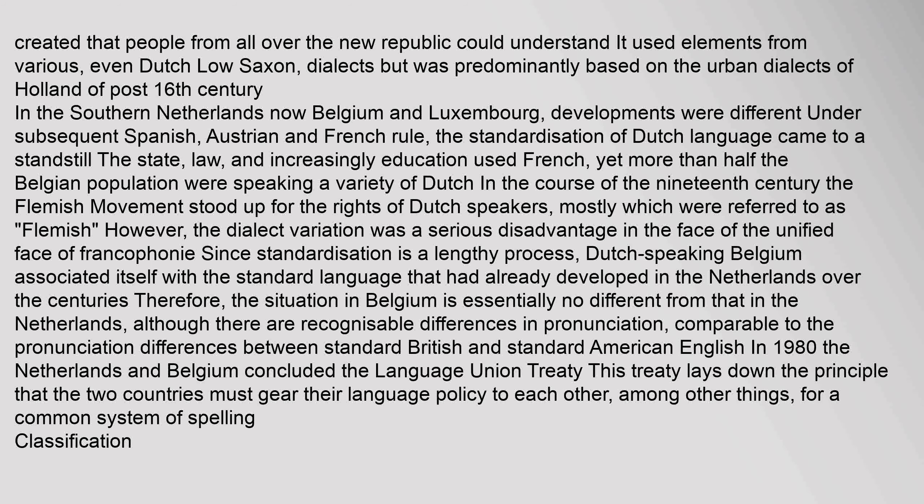In the Southern Netherlands (now Belgium and Luxembourg), developments were different under subsequent Spanish, Austrian, and French rule: the standardization of Dutch came to a standstill, and state, law, and education increasingly used French, yet more than half the Belgian population spoke a variety of Dutch. In the 19th century, the Flemish movement stood up for the rights of Dutch speakers. Dutch-speaking Belgium ultimately associated itself with the standard language already developed in the Netherlands. In 1980, the Netherlands and Belgium concluded the Language Union Treaty, laying down the principle that both countries must coordinate their language policy, including a common spelling system.